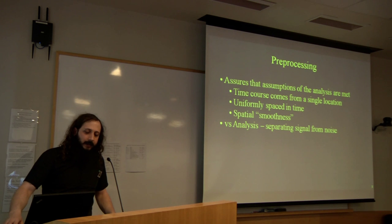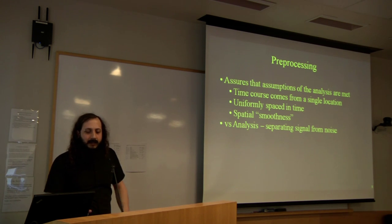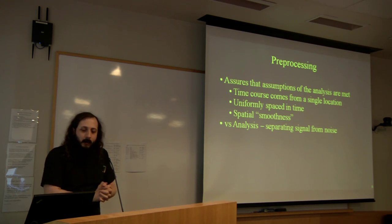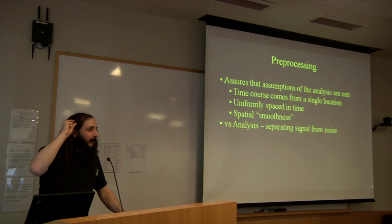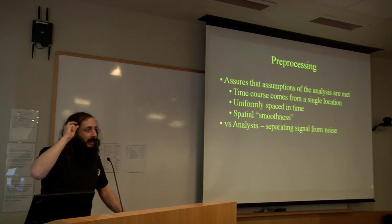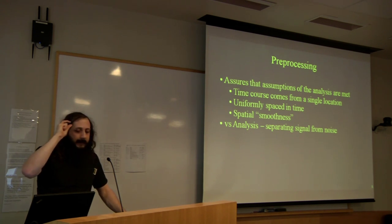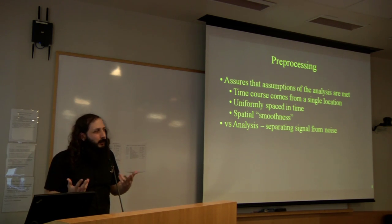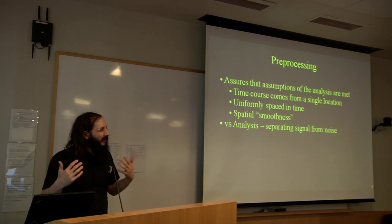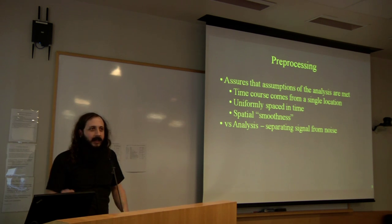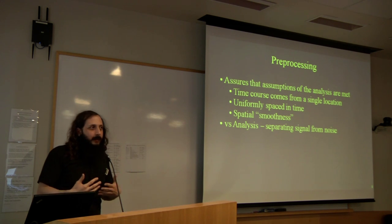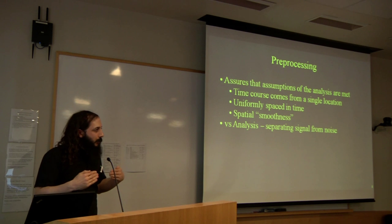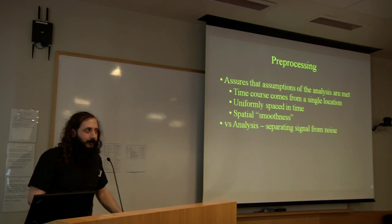The main goal of pre-processing is to ensure that the assumptions of our analysis are met. Our assumptions include: the time course comes from a single location — any given voxel is assumed to come from one anatomical location across the time series, which isn't always the case if there's motion. We also assume samples are spaced uniformly in time, and assume some degree of spatial smoothness in true activations. Note these pre-processing steps are quite different from the analysis, which is about separating signal changes due to neural activation from noise.